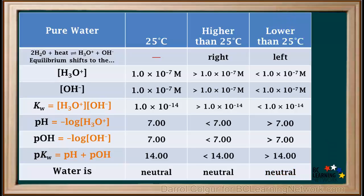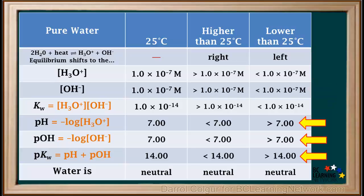It's good to be familiar with this table, but instead of memorizing it, it's better to figure out what the values of hydronium ion concentration, hydroxide ion concentration, and Kw will be just by the way the ionization equilibrium shifts — and to figure out what pH, pOH, and pKw will be using the fact that they have opposite trends to the ion concentrations. And of course, remember that pure water is always neutral, no matter what the temperature is.